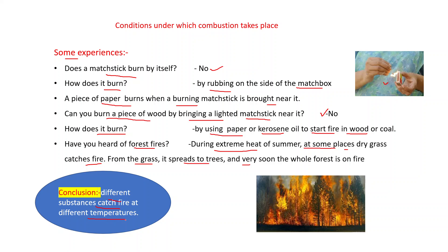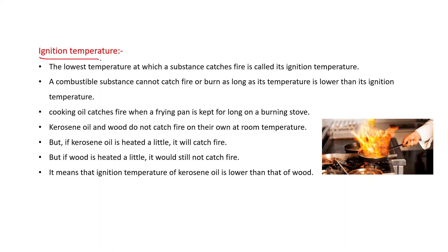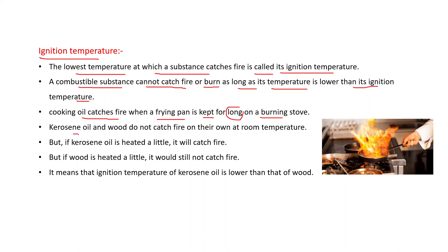There is a minimum temperature required for a particular substance to catch fire, and that temperature is known as the ignition temperature. The lowest temperature at which a substance catches fire is called its ignition temperature. A combustible substance cannot catch fire or burn as long as its temperature is lower than its ignition temperature. Kerosene oil and wood do not catch fire on their own at room temperature, but if kerosene oil is heated a little it will catch fire, while wood requires more heating. This means the ignition temperature of kerosene oil is lower than that of wood.